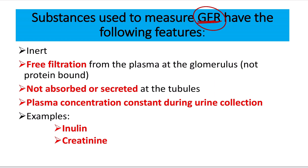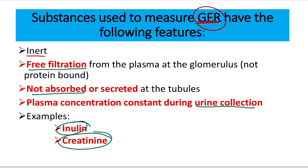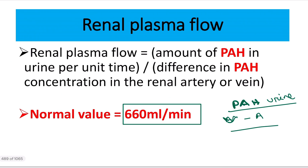For GFR measurement, the substance used should be inert, freely filtered from the plasma, not absorbed, and constant during urine collection. The substances used for GFR measurement are inulin and creatinine — two important substances. On the other hand, renal plasma flow is measured by para-aminohippuric acid.